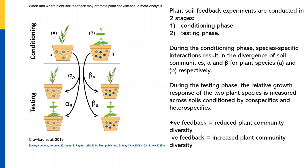Conversely, negative plant-soil feedback is where species A performs worse in its own soil than in the soil of other plant species. In a plant community context, this results in increased plant community diversity — the mechanism being that plants accumulate specific pathogens in the soil that then limit their own propagule establishment and growth near the mother plant. This is related to the Janzen-Connell hypothesis of species coexistence. I've used this framework a lot, especially in my PhD.